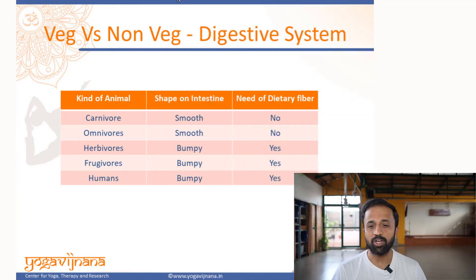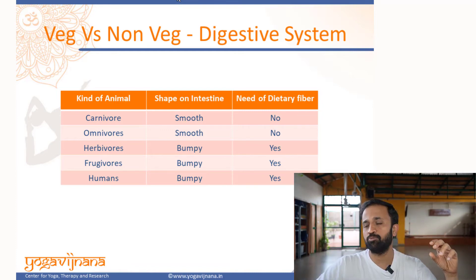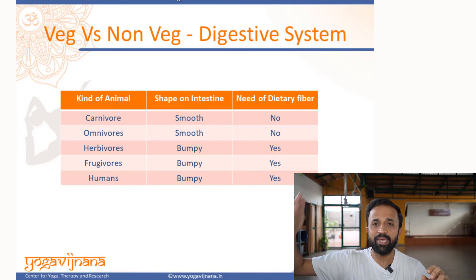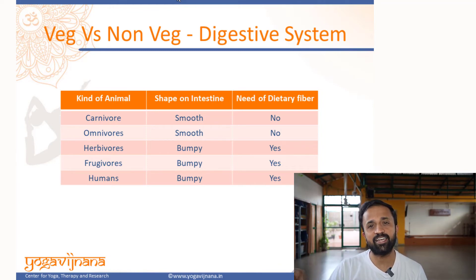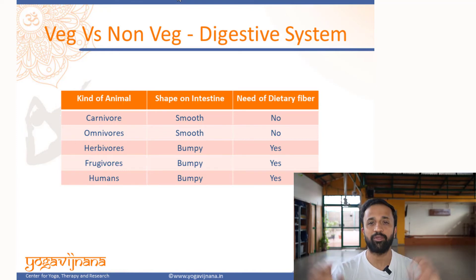Continuing with the digestive system, look at the shape of the intestine itself. In a carnivore or omnivore, the intestines are relatively smooth, so food passes through very easily. When it comes to herbivores, frugivores, or human beings, we have a lot of bumpy structures in the intestine so that food has to really pass through them, spending more time to get absorbed by different structures. We also need dietary fiber in our diet for food to pass through the intestine easily.